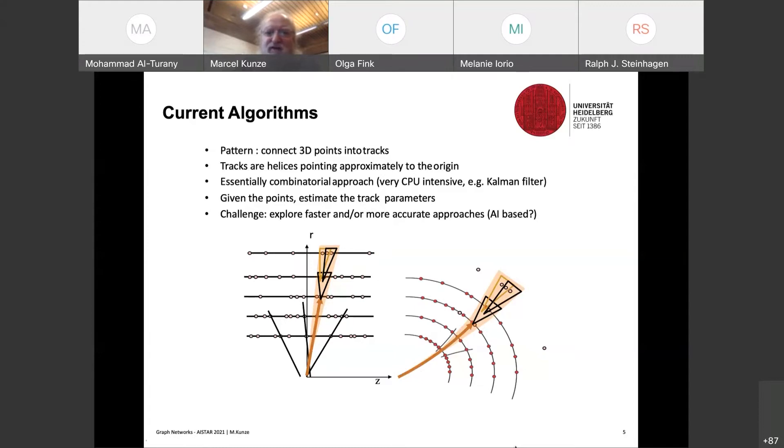So you start from the innermost vertex and then you go outside and you try to apply a model, which is usually a helix model. And then picking up these points and try to reconstruct the track, you remove these points from the set and you start over and over again until you have all possible solutions. So given the points and the tracks, you can then estimate the track parameters and do the physics at the end. And the challenge is in the new LHC high luminosity era that the current algorithms really do not perform very well. They take too much CPU. And therefore, there was the idea to explore faster and maybe more accurate approaches and potentially AI based approaches.